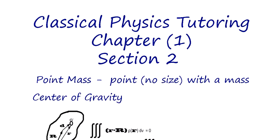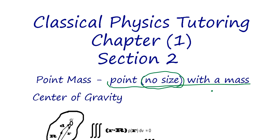Classical physics, chapter 1, section 2. We talk about point mass — this is a very important concept in order to use Newton's mechanics. The point mass doesn't have any size but it has a mass, so it's not physically possible as an object. It's a kind of ideal object: no size, just a single point, but it has a mass.